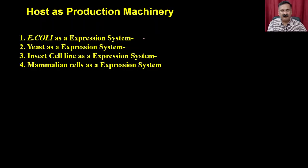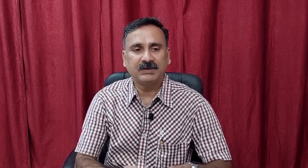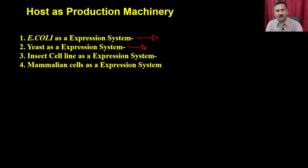In the previous lecture we discussed about the E. coli expression system - how you can use E. coli for transformation, screening, and how you can monitor overexpression with the help of SDS-PAGE. In today's lecture we are going to discuss more about yeast as an expression system. The yeast is the simplest unicellular eukaryotic cell available for protein production.